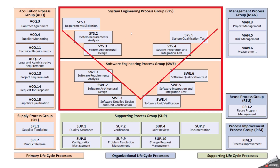In ASPICE 3, if you look, we have a lot of process groups. The important ones are the system engineering process group and the software engineering process group. In this video, we are going to discuss about the software engineering process group — the important one being software requirements analysis. This is also a V-model, so you can see it starts from SYS1 and ends with SYS5, and it goes through from SWE1 to SWE6 as well.